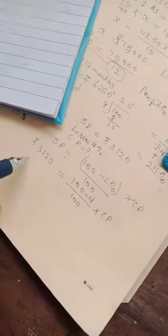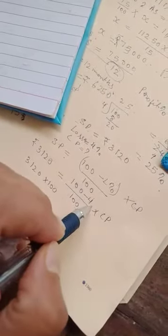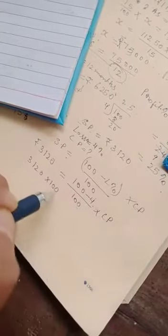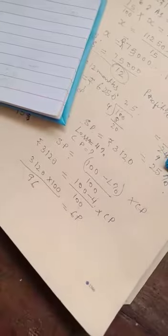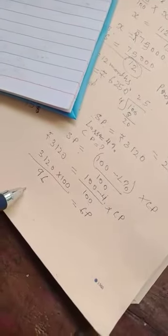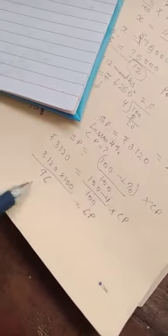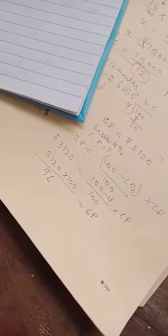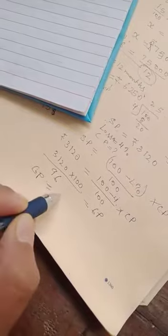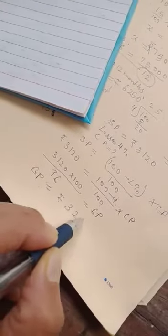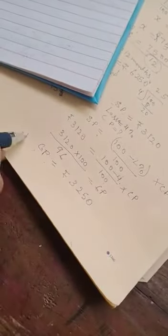SP you know, this one rupees 3120 equals 100 minus loss is 4, by 100 into CP. So this one you can cross multiply. That side 100 minus 4 will be 96, this is into. Take this side, it will become divide equals CP. So here you multiply then you divide. Please do yourself, pause the video then do yourself and divide. See how much you can. So I hope you finish. You will get CP is equal to rupees 3250.